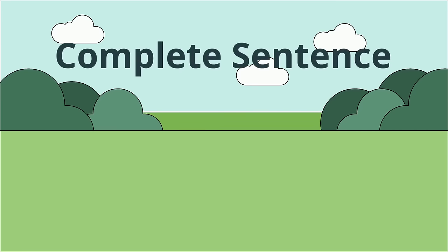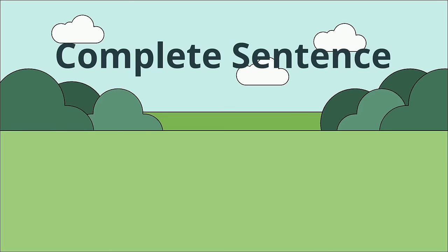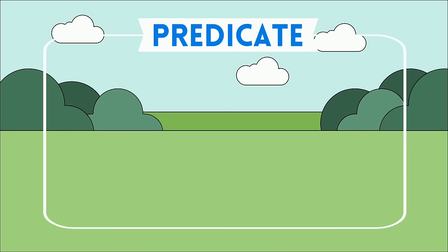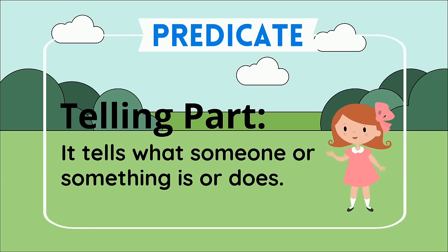Now that we've covered the first part of a sentence — the subject — let's move on to the next part: the predicate. The second part of a sentence is the predicate. The predicate tells what the subject is or does. In other words, it tells what someone or something is or does.